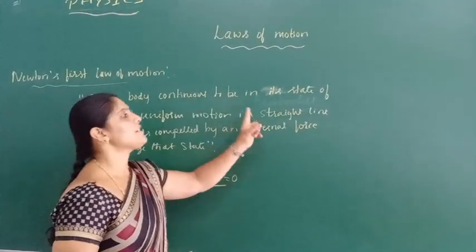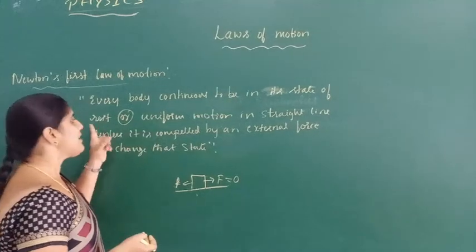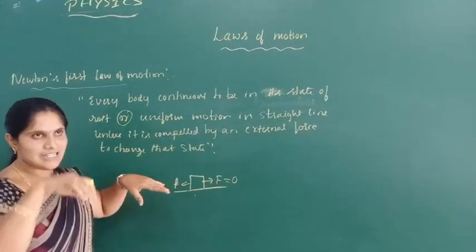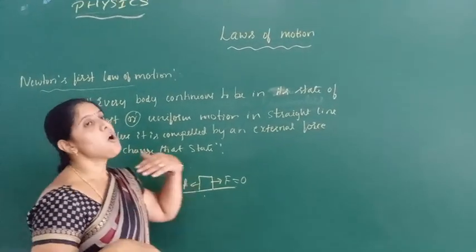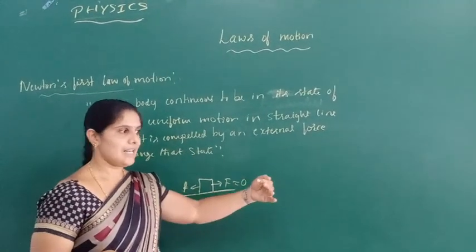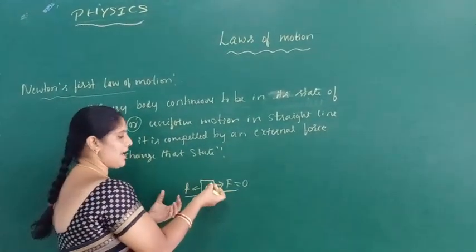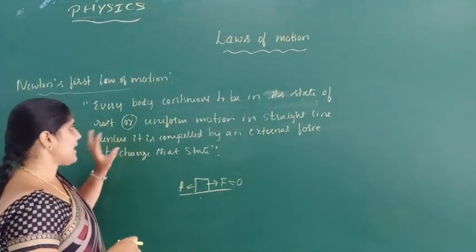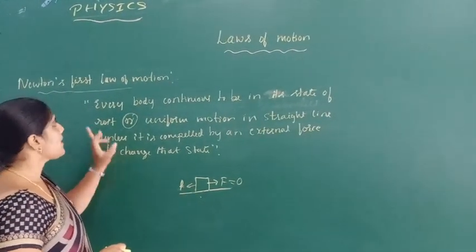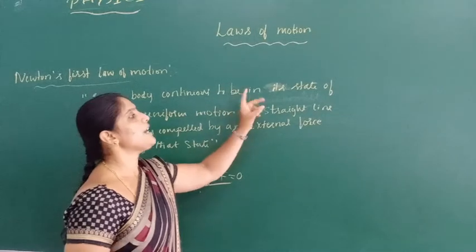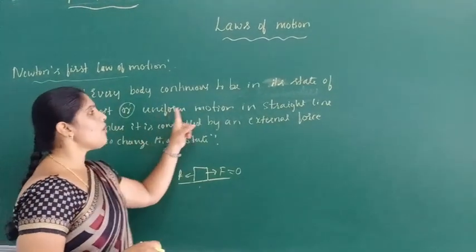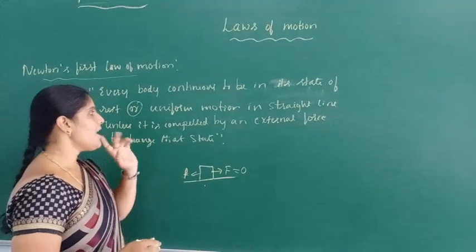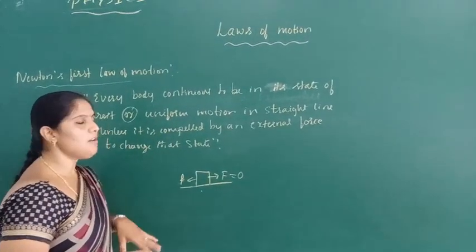Every body continues to be in the state of rest unless it is compelled by an external force to change that state. The block does not come to a motion state unless an external force is applied. Next, the second part: every body continues to be in the state of uniform motion in a straight line unless it is compelled by an external force.